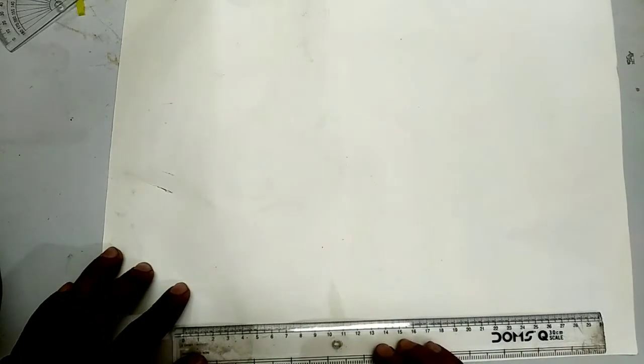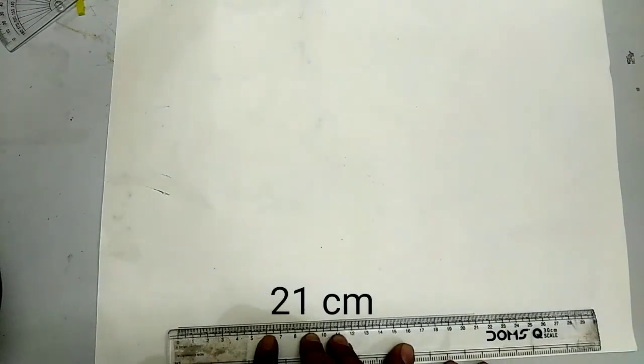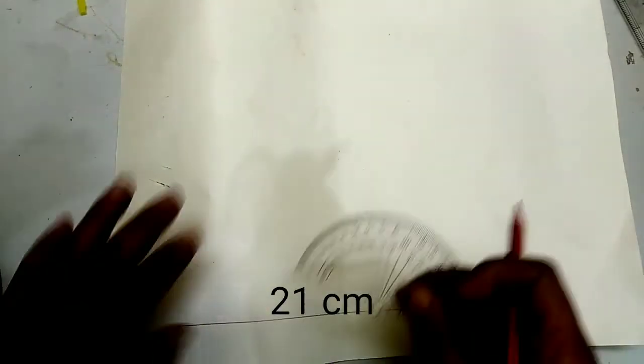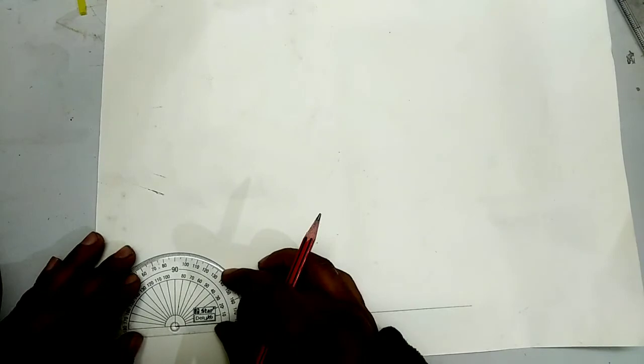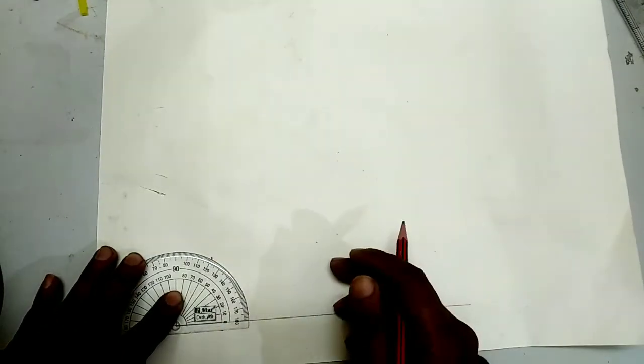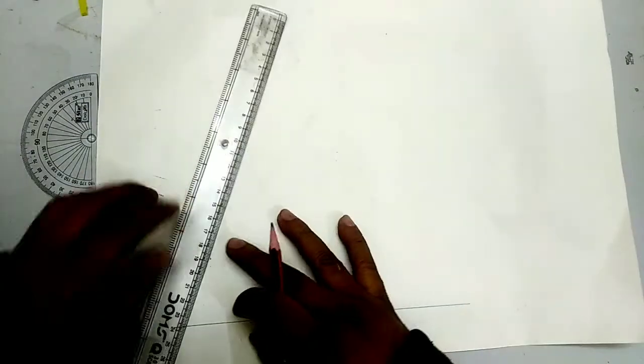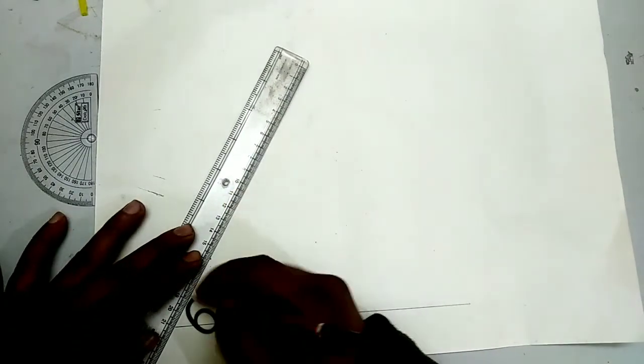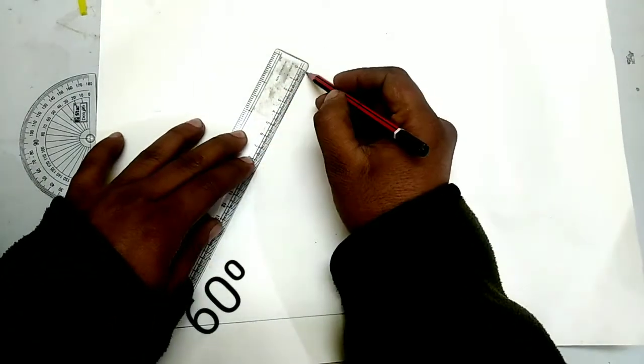We will draw a line segment of 21 centimeters, then make an angle of 60 degrees and again a length of 21 centimeters on the other side.